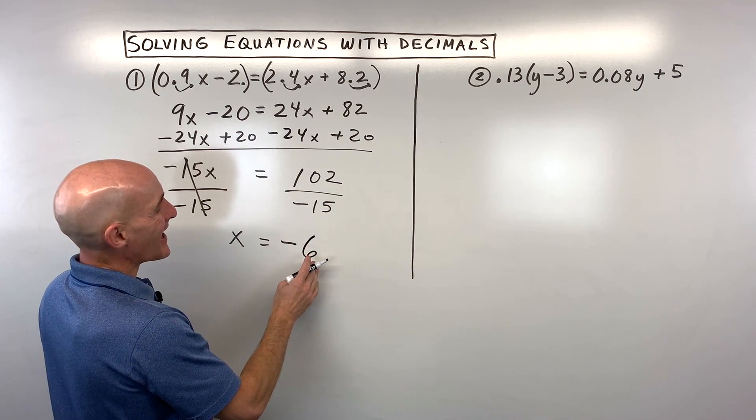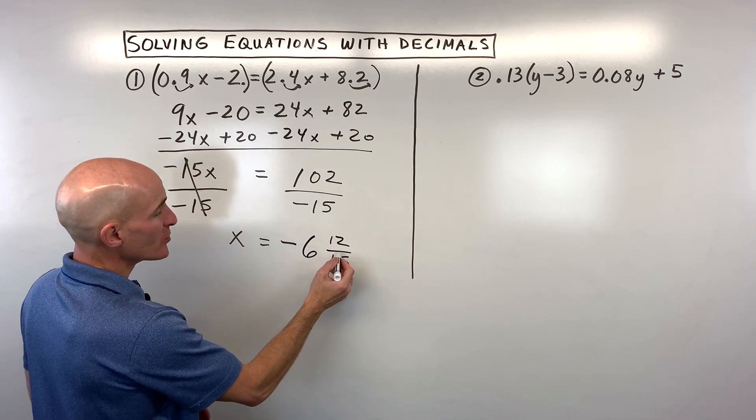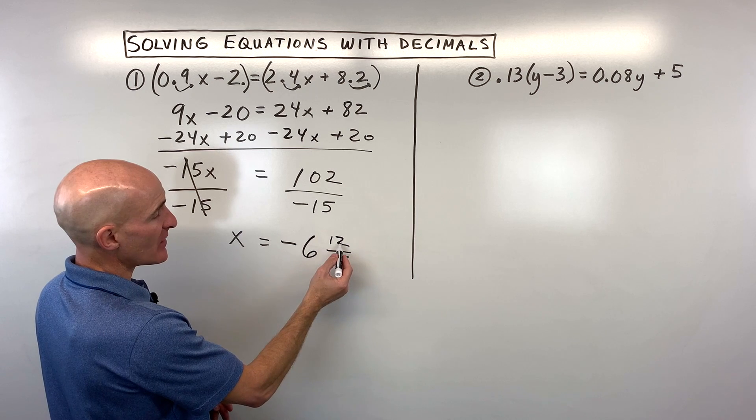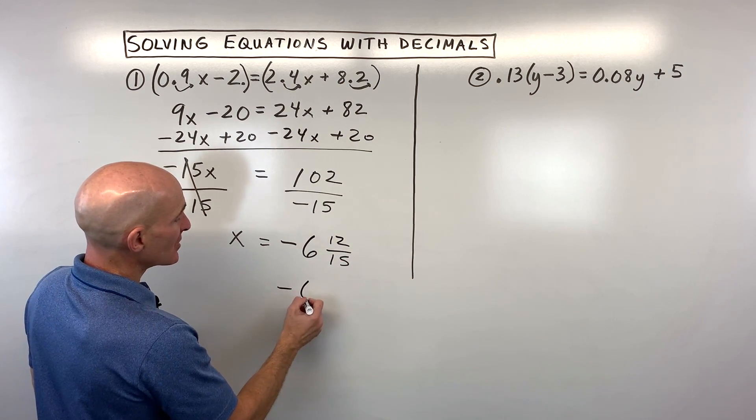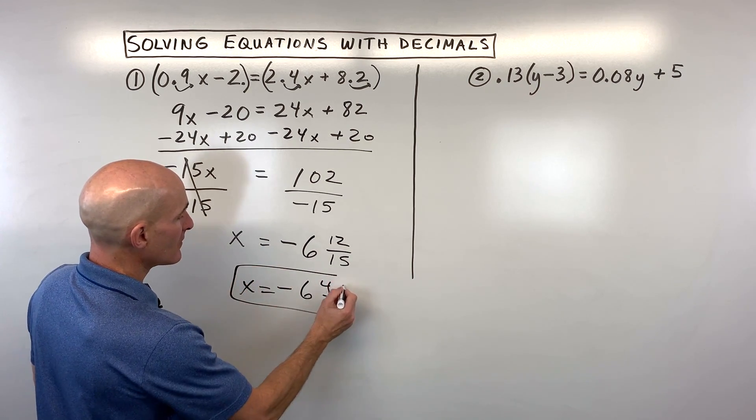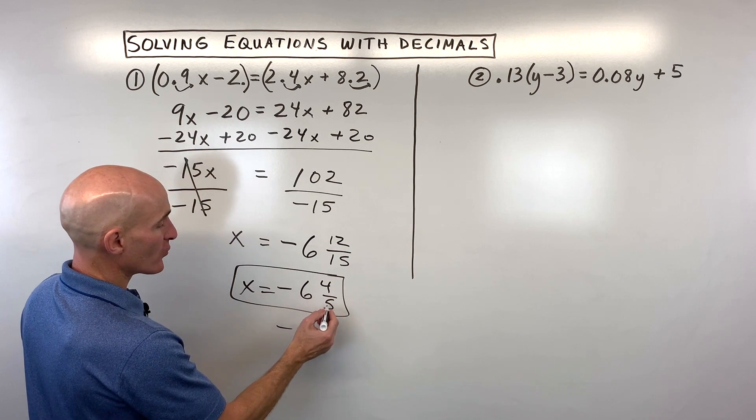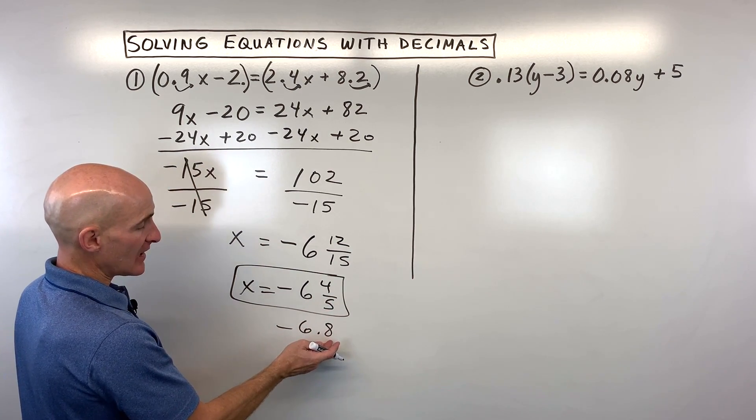15 times 6 is 90 with 12 left over. So that's going to be 6 and 12/15. We can reduce the 12/15 by dividing by 3. That's going to come out to negative 6 and 4/5. You could also write this as negative 6.8 since 4 divided by 5 is 8 tenths.